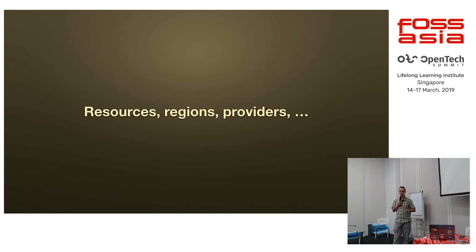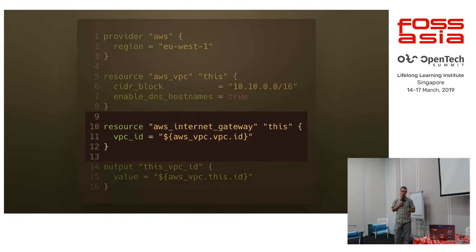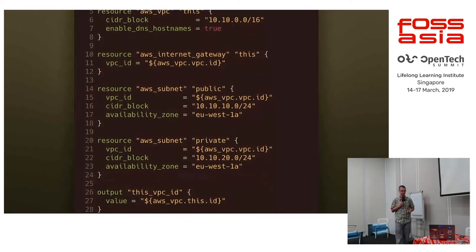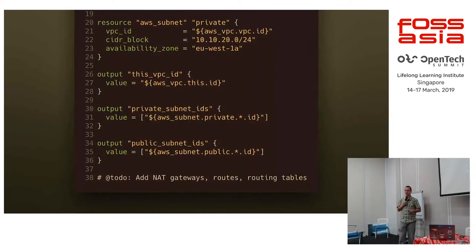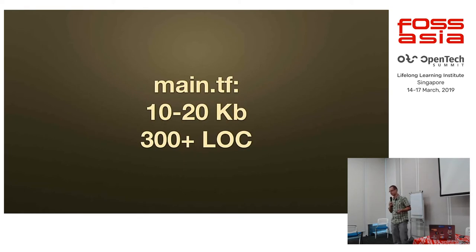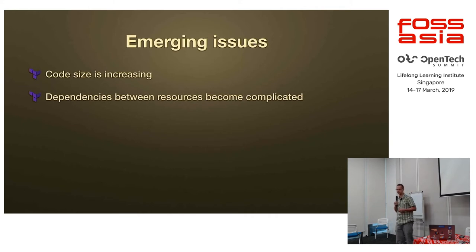In this example, we are adding an AWS Internet Gateway resource because we want to go to the Internet, and we start adding a couple of subnets. By the time we add other resources like NAT gateways, routes, and routing tables, our network stack for AWS will be much more than just 40 lines. The main.tf file will eventually grow to 10, 20 kilobytes and 300 lines of code or more — and we're talking just about the network stack. We're not even talking about deploying sophisticated resources like autoscaling groups or load balancers. The code size is increasing constantly and dependencies between resources are getting more complicated.